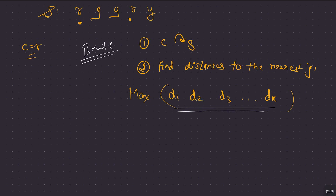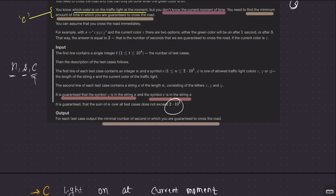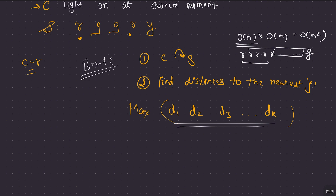In the worst case, there can be on the order of n occurrences of c in s. For example, consider 'rrrr...g' — nearly half the string is red, and green is at the end. You can have O(n) occurrences of c, and for each you do a linear search to find the nearest green — that's O(n) time each, giving O(n²) overall. But the constraints go up to 2×10⁵, so you cannot exceed O(n log n). The brute force implementation won't work; we need to optimize.